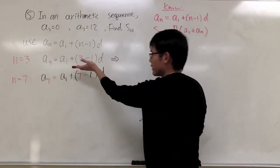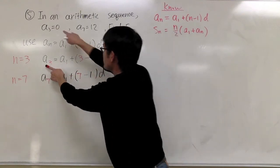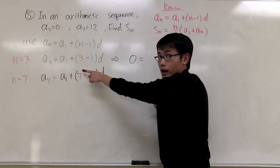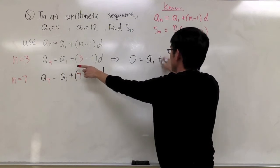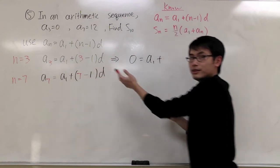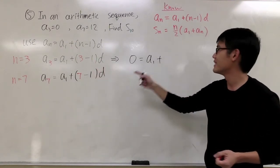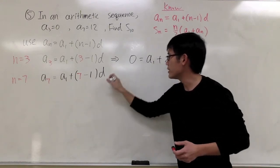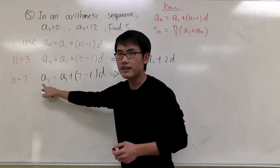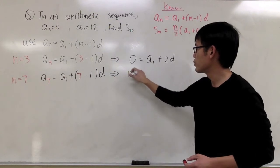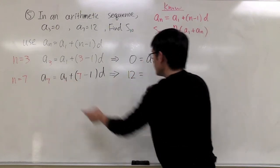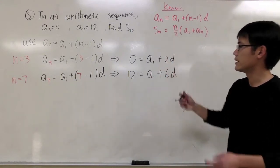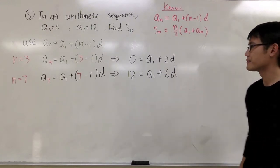Looking at the first equation, a3 is equal to 0, so it becomes 0 = a1 + 2d. For the second equation, a7 is equal to 12, so we get 12 = a1 + 6d. Now we have two equations and we are going to solve for both a1 and d.